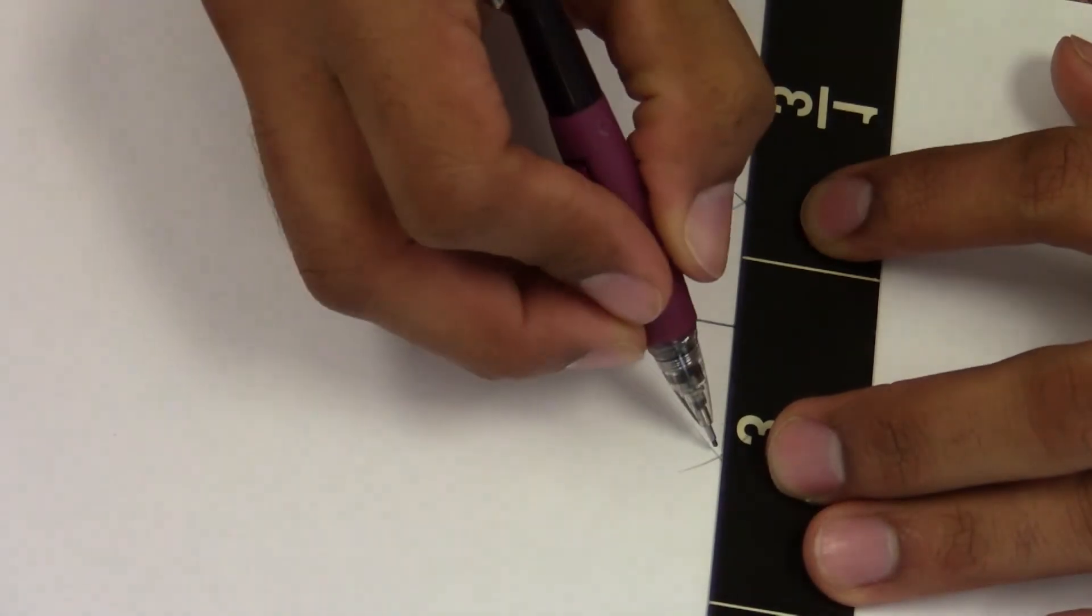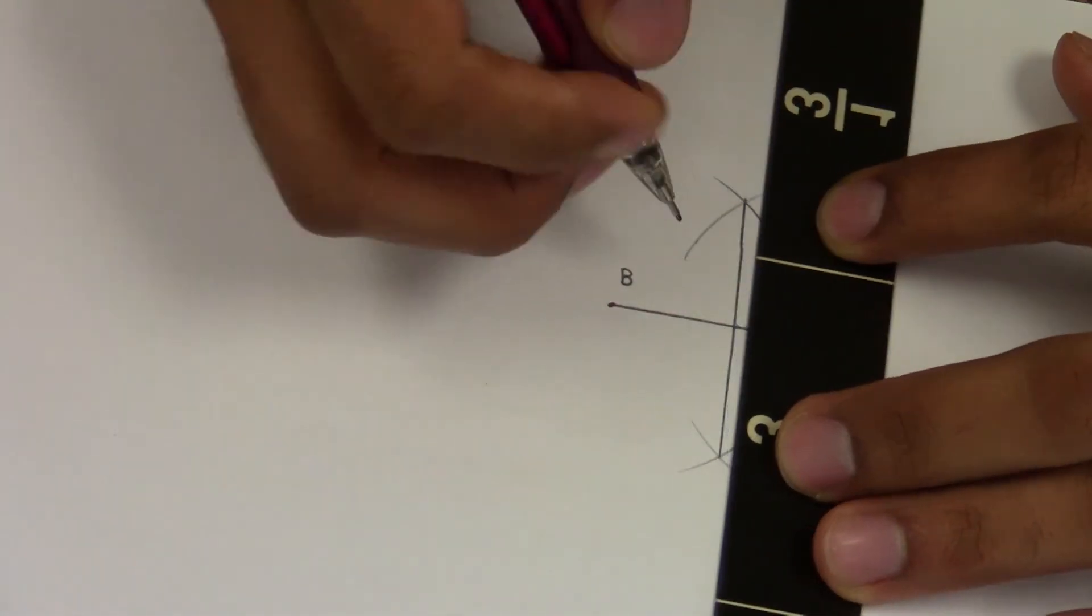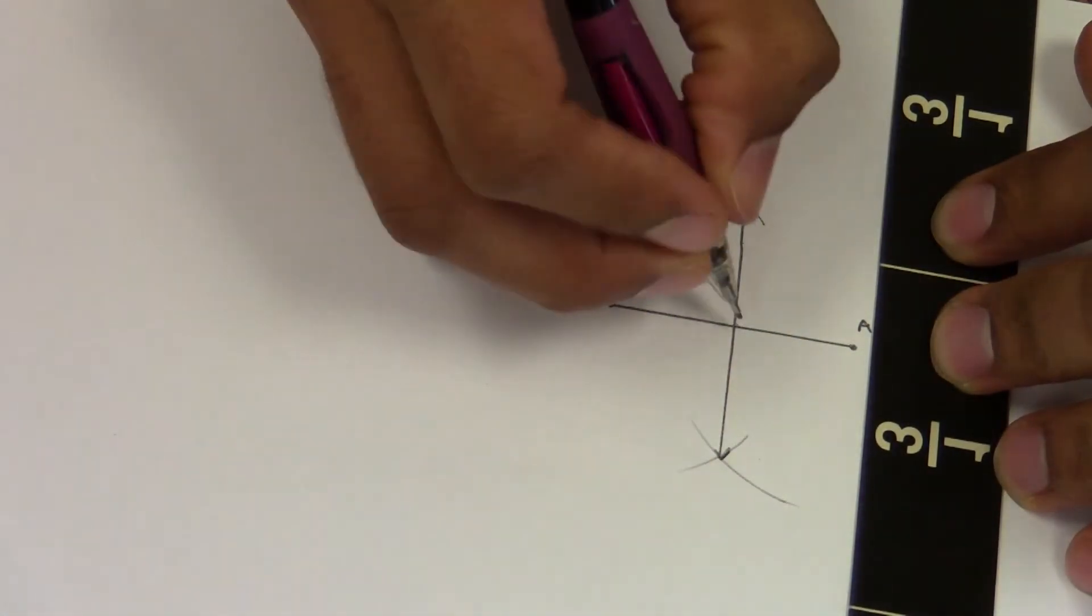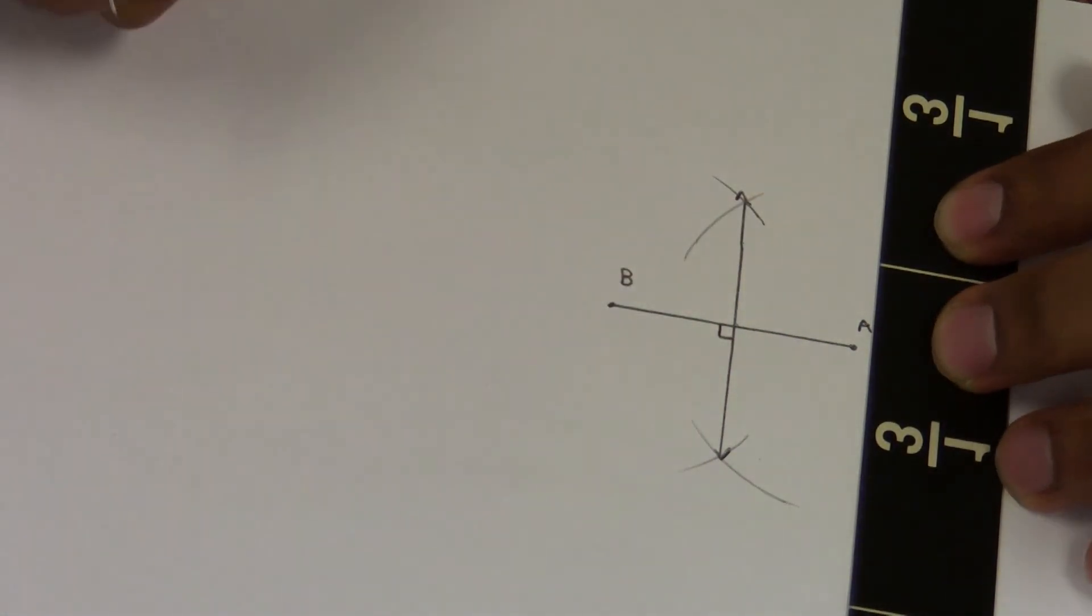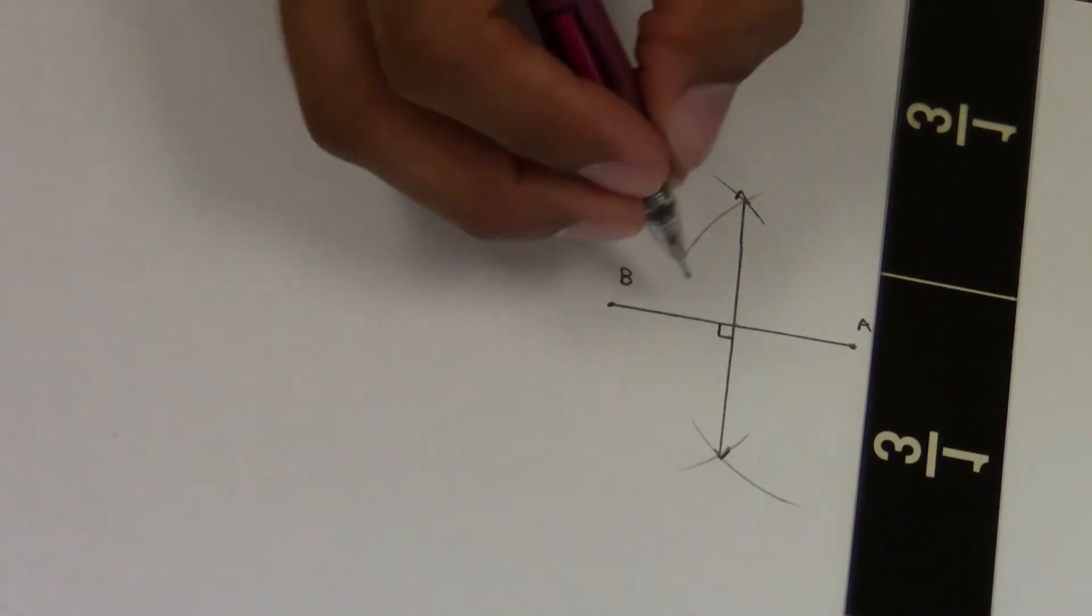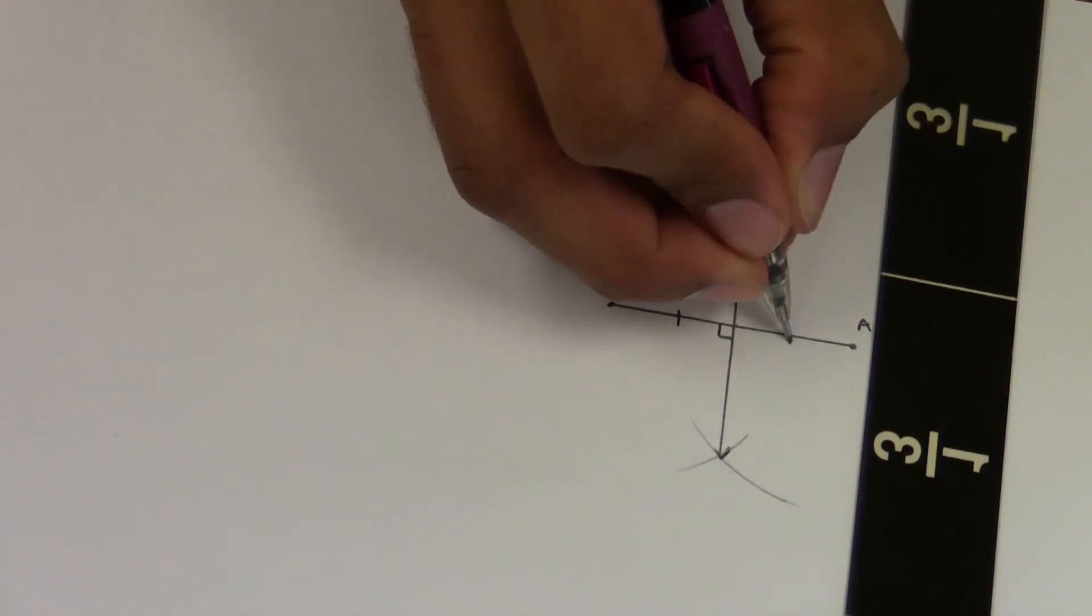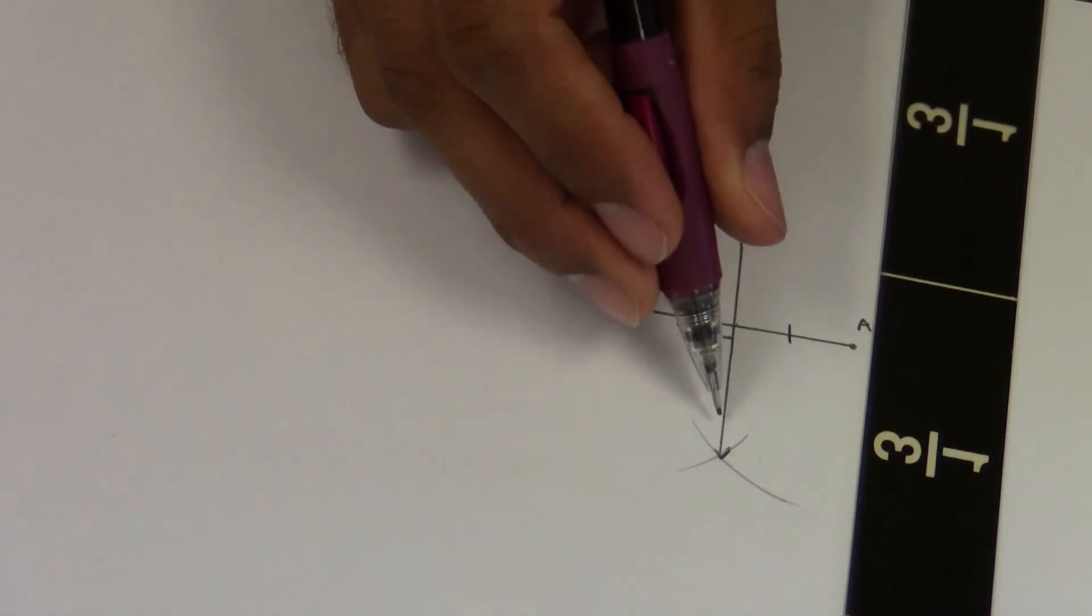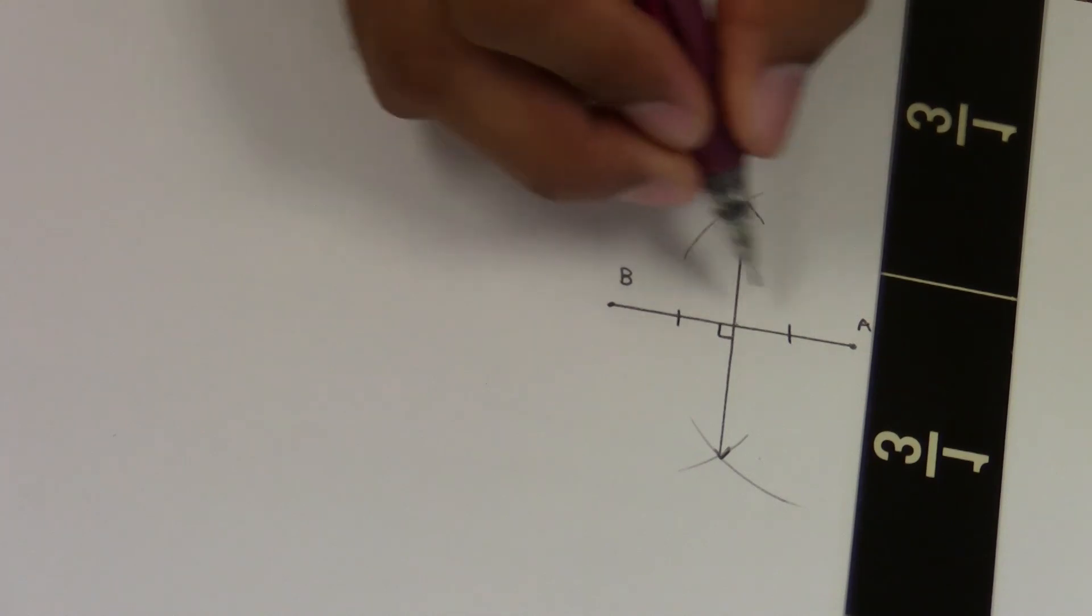So I made a line that's perpendicular, and not only is it perpendicular, it cut my line segment in half. So it is a perpendicular bisector. I'll see you later.